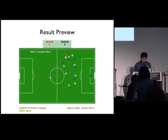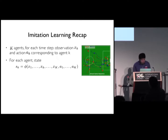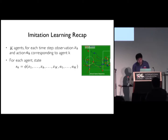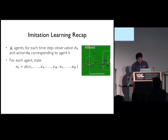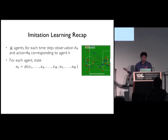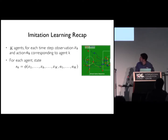Let's talk about imitation learning for a bit. Here's a quick sketch of a multi-agent imitation learning formulation, which generalizes the single-agent case as well. The data that we have has multiple sequences, and each sequence in the data has, let's say, k expert trajectories. At each time step, we receive observation x_k and action a_k corresponding to some agent k. For ease of notation, I'm going to suppress all the time indices.